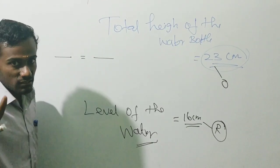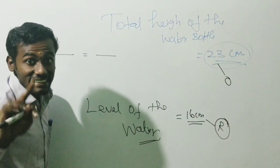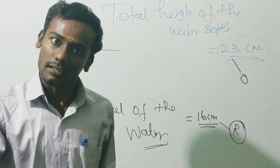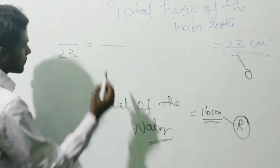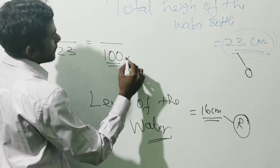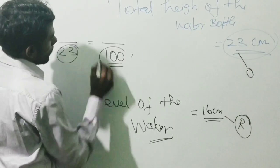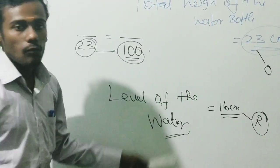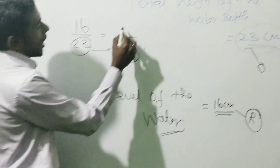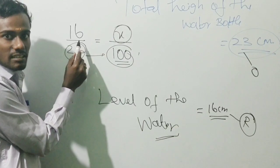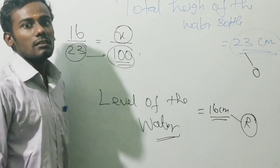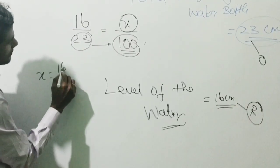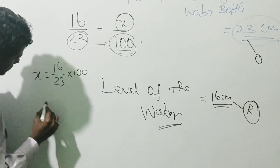Okay, first thing: the total height is 23 centimeters, and 23 centimeters equals 100%. Understand — the total height is 100%. Then the level of the water is 16 centimeters, and we have to find out what percentage 16 centimeters corresponds to — the percentage of water present in the bottle. So let X = 16/23 × 100. X is equal to approximately 70%.